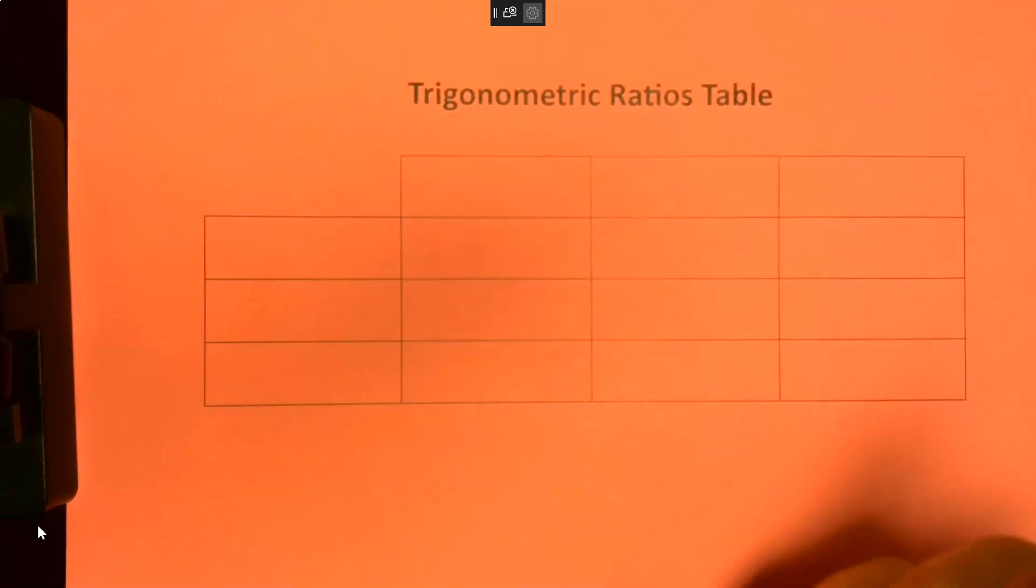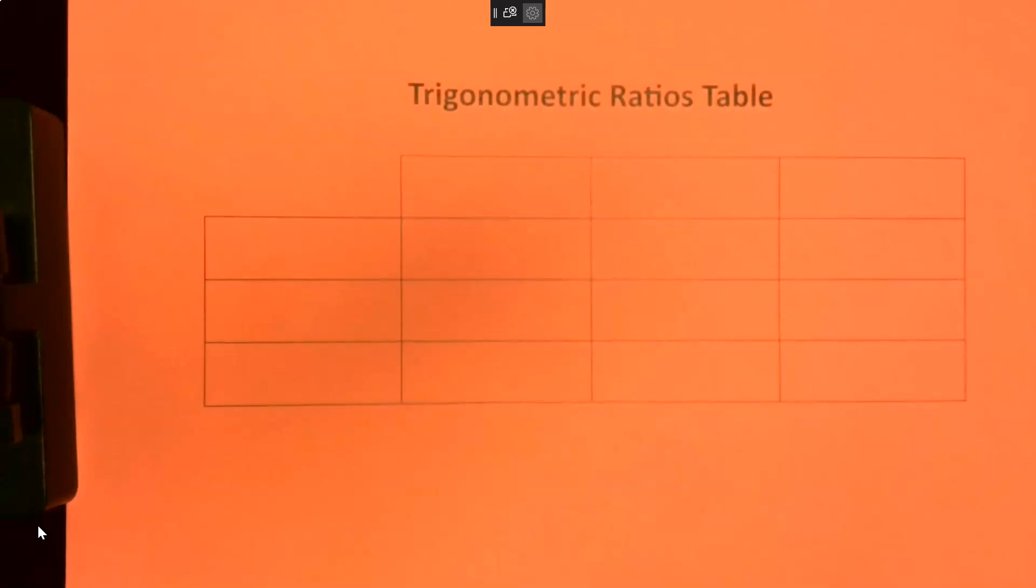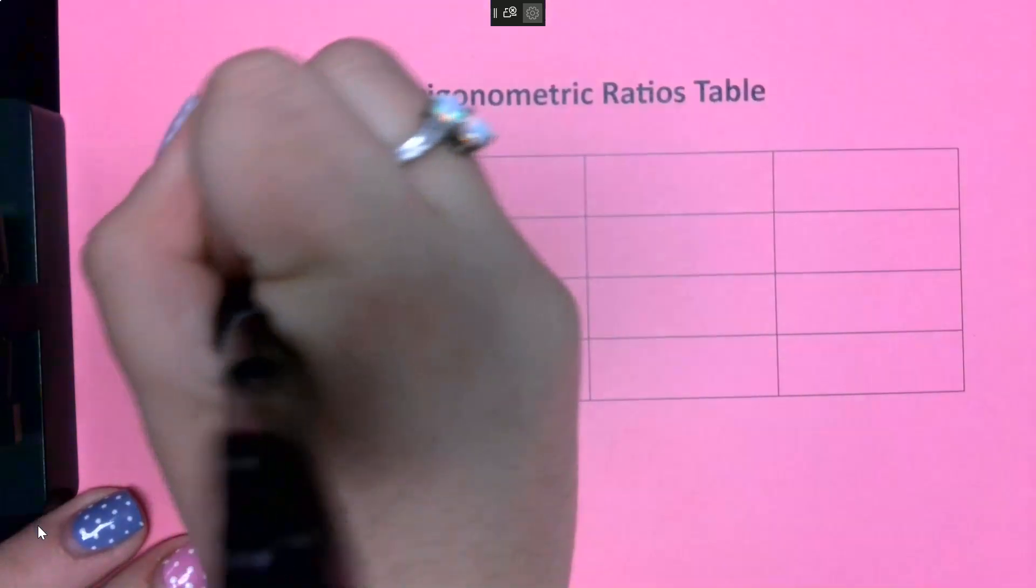The way this trig ratio table works is you have your three trig functions: sine, cosine, tangent.